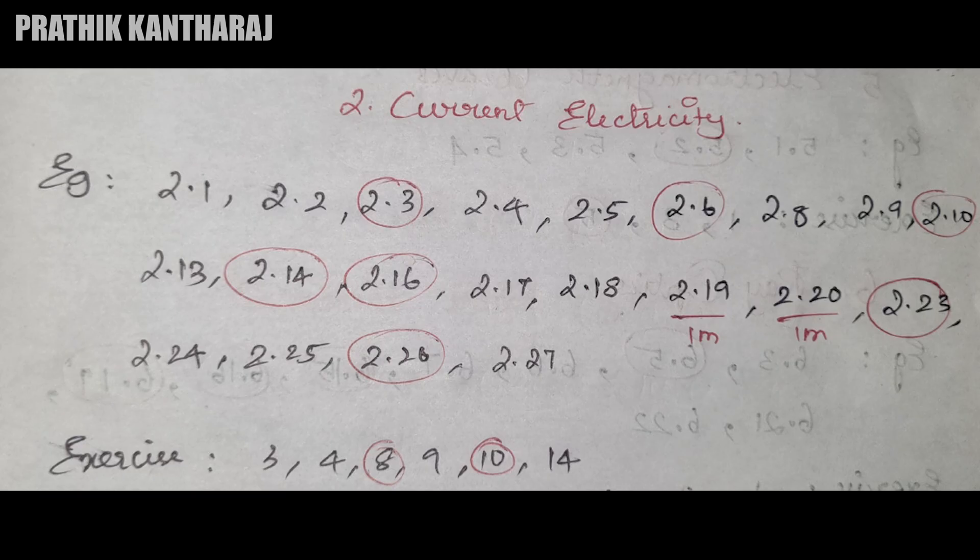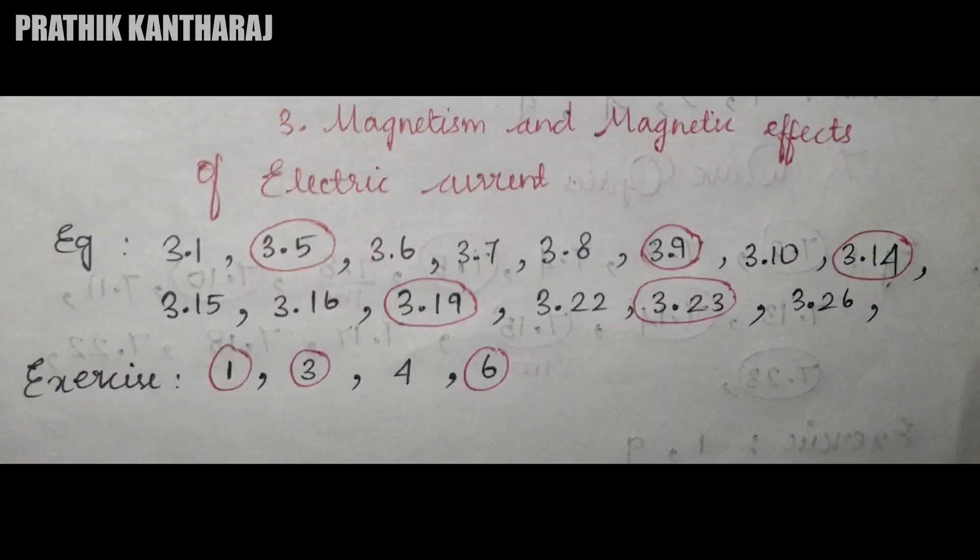And in the third chapter, Magnetism and Magnetic Fields of Electric Current: examples 3.1, 5, 6, 7, 8, 9, 10, 14, 15, 16, 19, 22, 23, 26. If you are talking about the exercises: 1, 3, 4, 6.